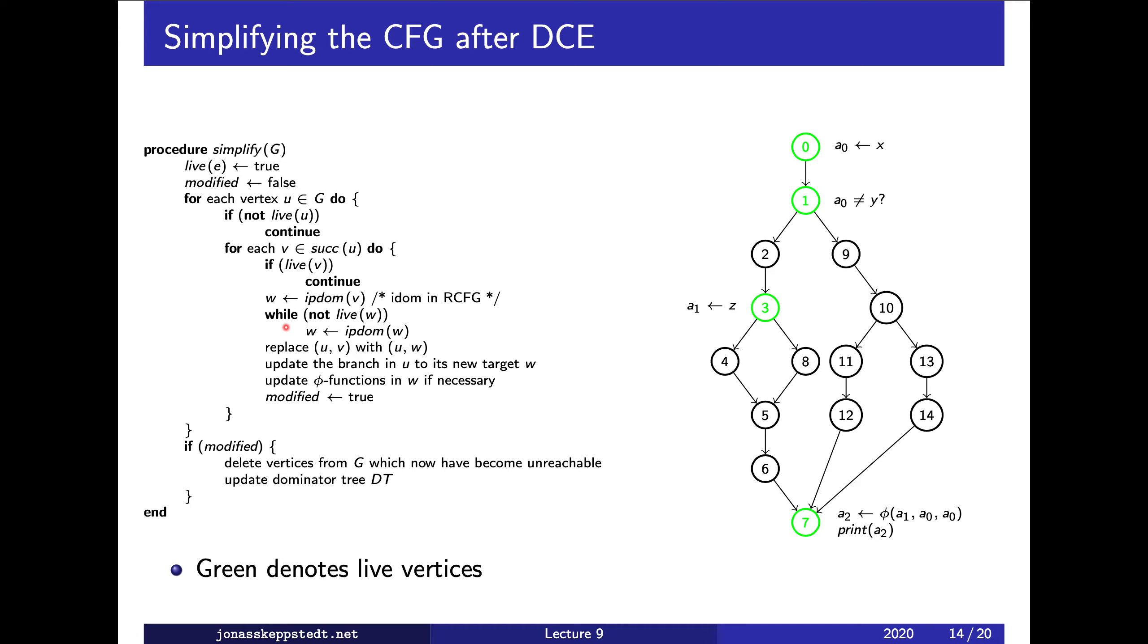How can we find three? Using this loop, we take the immediate post-dominator and follow immediate post-dominators up in the dominator tree in the reverse control flow graph, or the post-dominator tree. We branch from one to the first live, the nearest live post-dominator ancestor in the post-dominator tree of two, which is three. So we skip all those which are not live. It's more clear to see here.